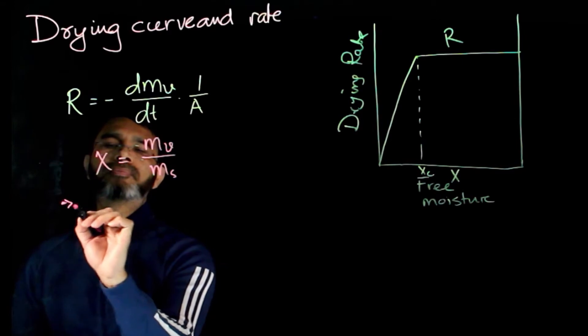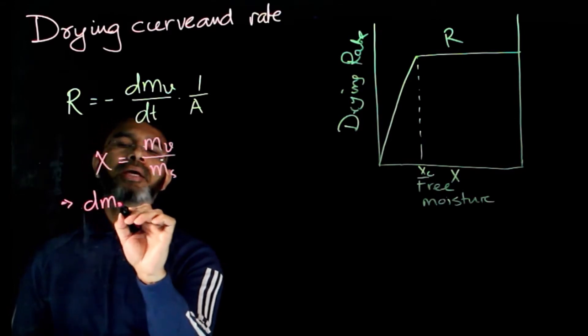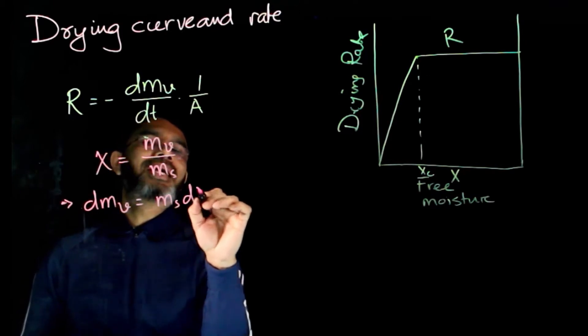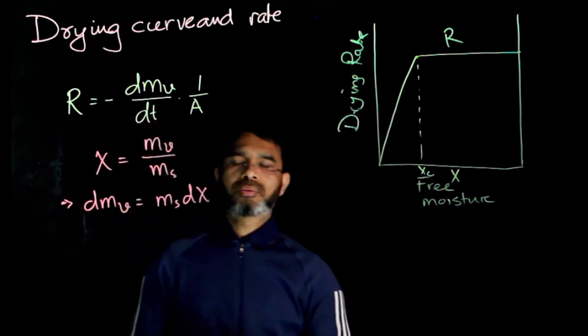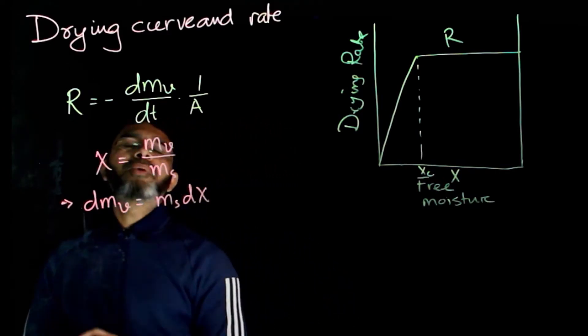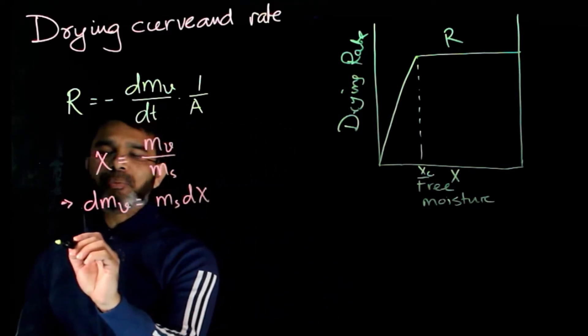So from here, you get dmv to be ms dx because the mass of the solid remains constant. Now, from here, you can write dt to be...